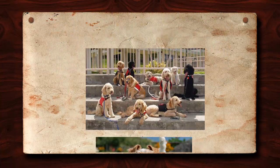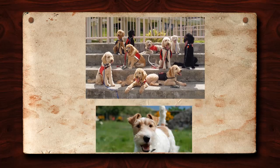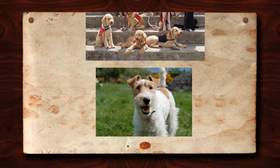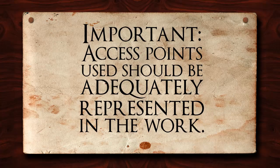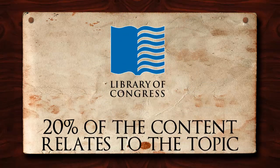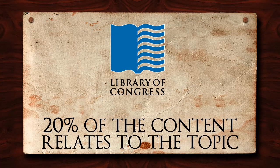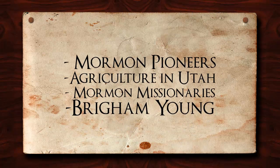For example, while at the collection level your subject may be dogs, at the sub-series level the subject might be more specific, such as wire fox terriers. At any given level of description, it is also important that access points used should be adequately represented in the work. We follow the Library of Congress rule, which requires that at least 20% of the content of the materials being described relate to the topic before a subject access point can be assigned. So for example, if a collection level description includes material on Mormon pioneers, agriculture in Utah, Mormon missionaries, and Brigham Young, only those with at least 20% of the material should be used at that level.